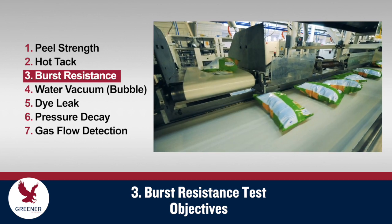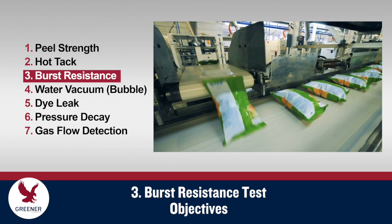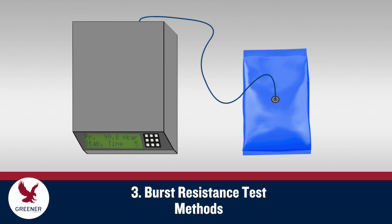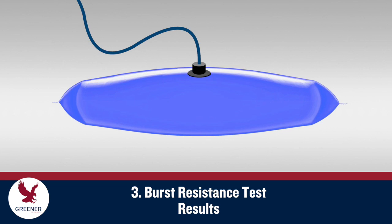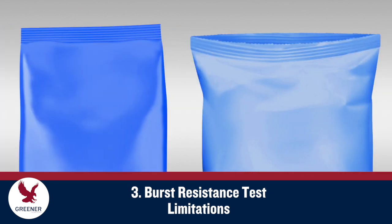Burst resistance tests measure the pressure required to burst a package. An unrestrained package is inflated until the internal pressure causes seal failure. Burst pressure values are often used to evaluate the effects of elevational pressure changes when packages are shipped. Since outcomes depend on package size and geometry, a given pressure level generates greater force across a wider package. Burst resistance tests don't provide easily comparable values for seal strength.